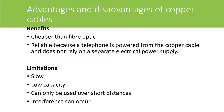The advantages of copper cable is that they're cheaper than fibre optic and they're also really reliable because a telephone is powered from a copper cable and does not rely on a separate electrical power supply. However, it's very slow, has low capacity, can only be used over short distances and interference can occur.